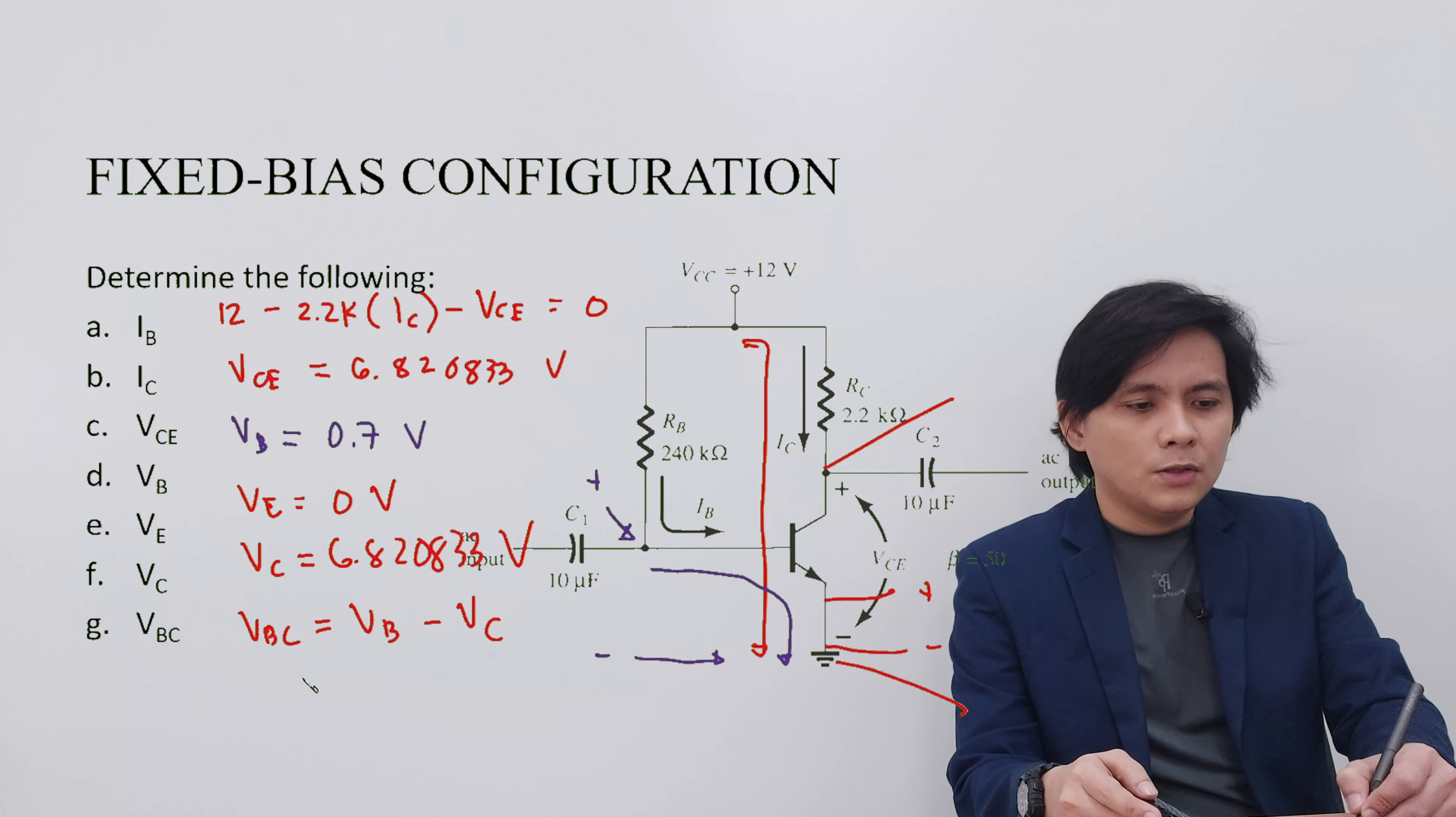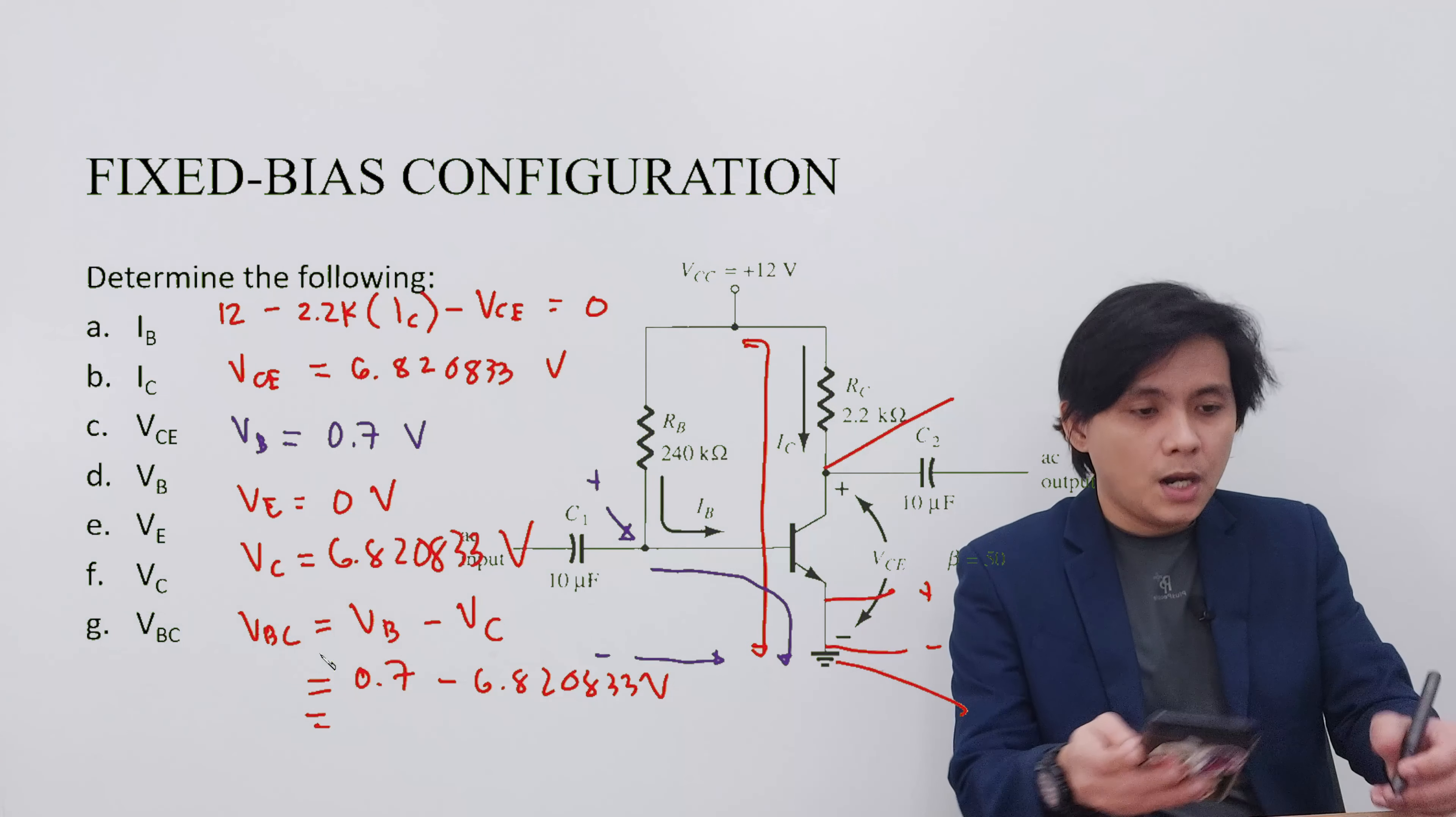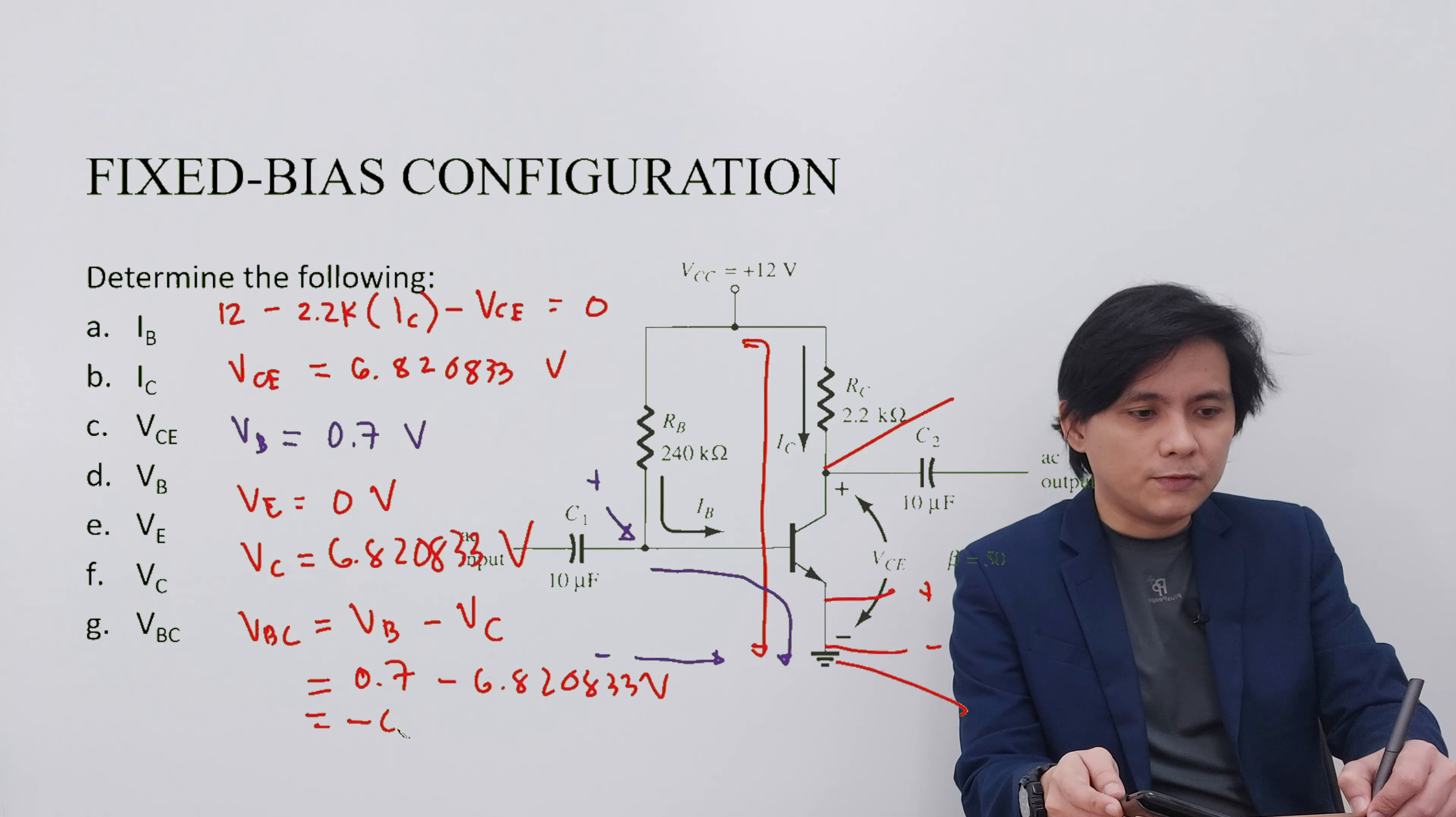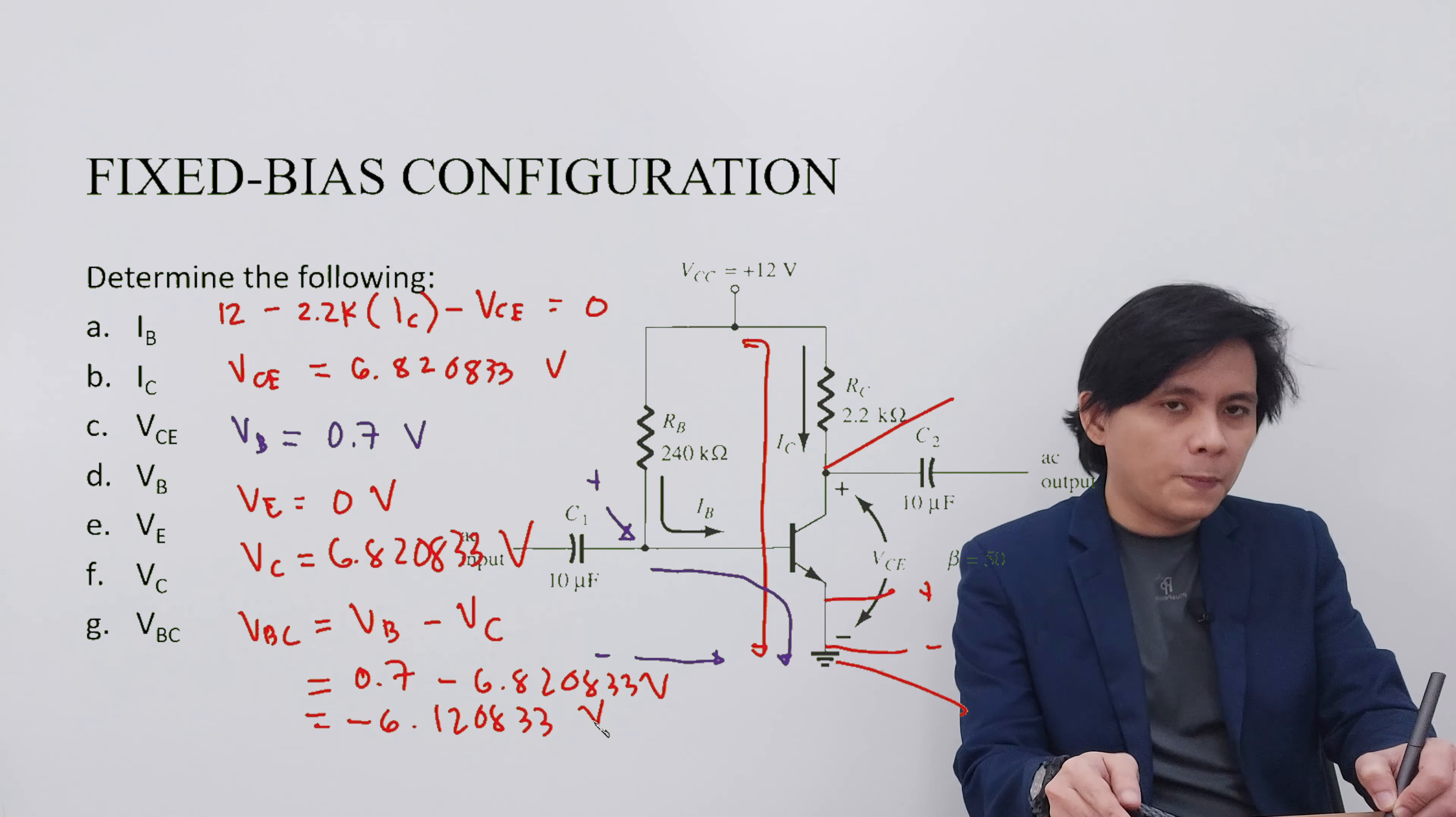So this is 0.7 minus 6.820833 volts. Our VBC is equivalent to negative 6.120833 volts.